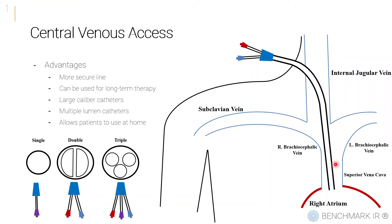Here's a good example — a non-tunneled catheter placed through the internal jugular vein, terminating at the cavo-atrial junction, right around where the superior vena cava joins with the heart. It's a more secure line and can be used for longer-term therapy — longer than just a few weeks, which is your limitation with a midline, or a few days with a peripheral IV. These are usually larger caliber catheters with multiple lumens: single lumen, double lumen, or triple lumen. The central venous access also allows patients to actually go home if they need IV medications or fluids over a long period of time beyond their hospital stay.